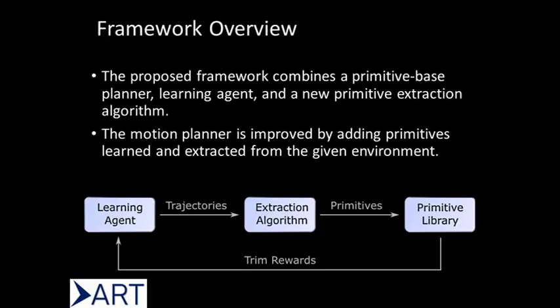We present a novel extraction algorithm which takes trajectories generated by a learning agent and identifies motion primitives within them. These motion primitives are added to a primitive library which uses them to formulate shaping rewards that are passed back to the learning agent to help with the discovery of even more motion primitives.